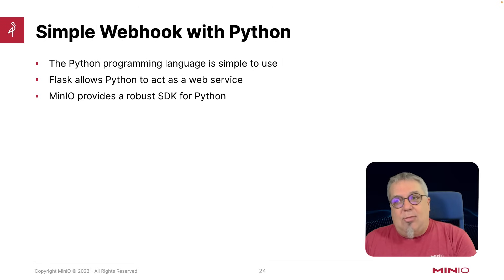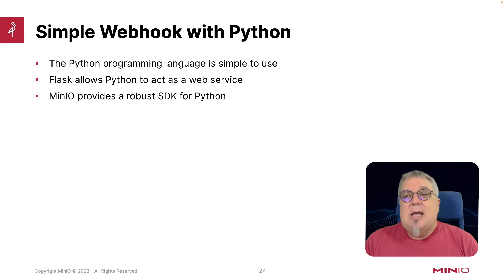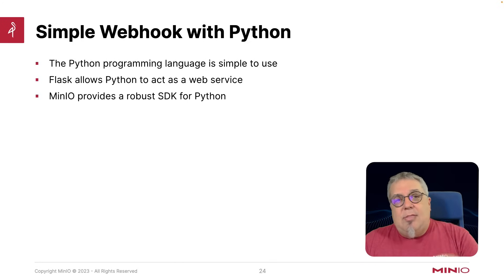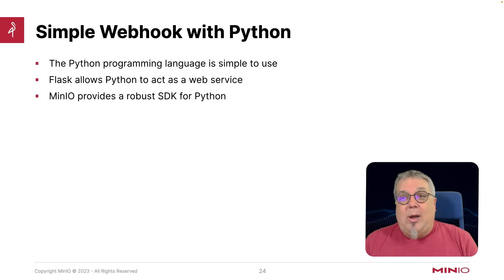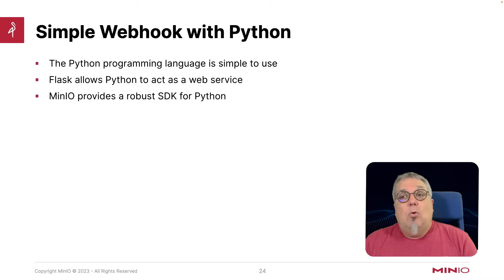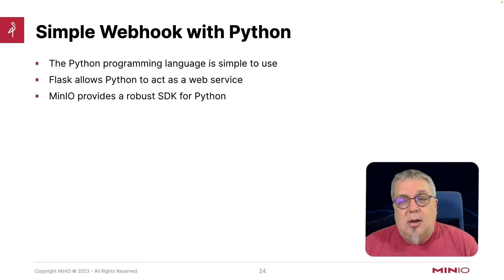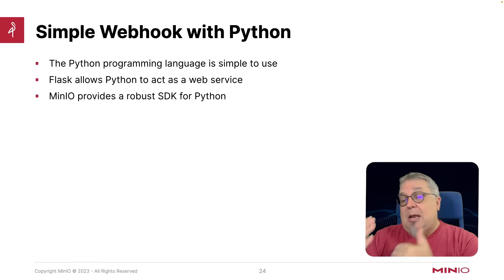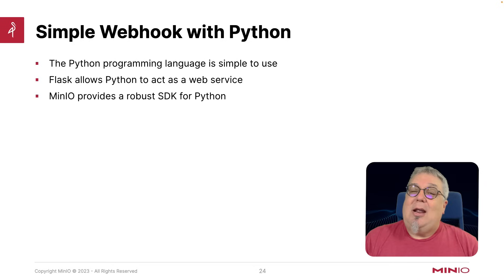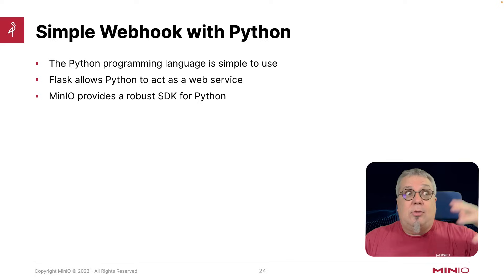For a webhook with Python, it's great. Python is really simple to use — there's no compilation and it's a very easy-to-understand language. There's also a Python extension called Flask which allows you to deploy a web service in Python trivially. Plus, since Min.io has a robust SDK for Python, I can use the Flask extensions and the Min.io extensions to develop a really robust webhook without having to stand up a whole other server or service.